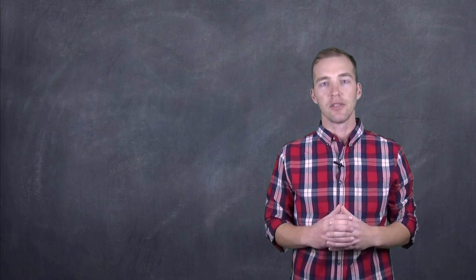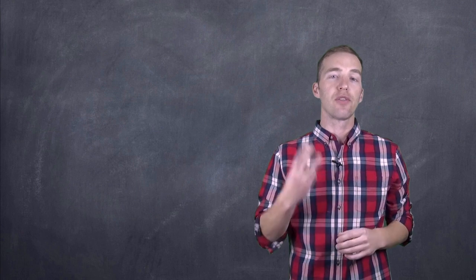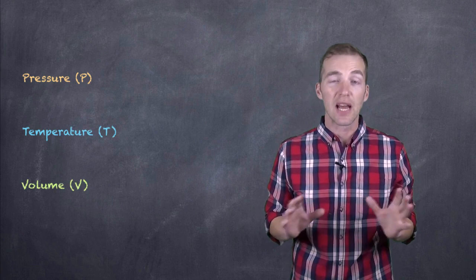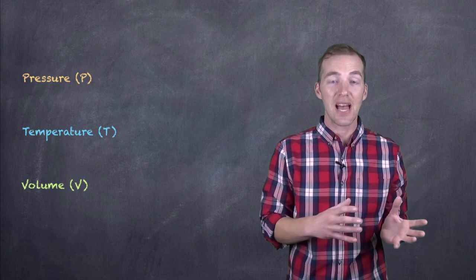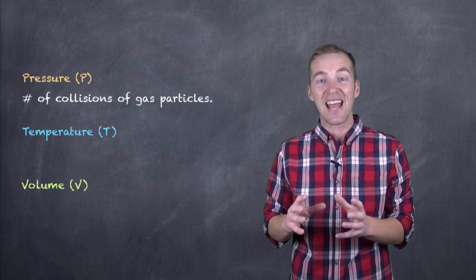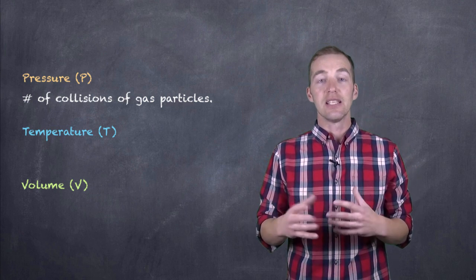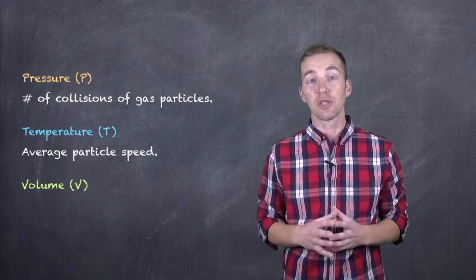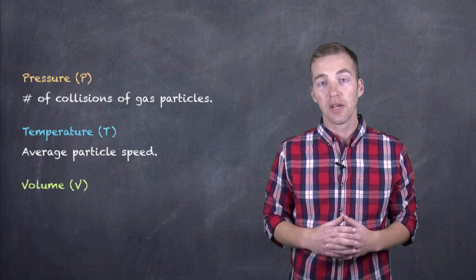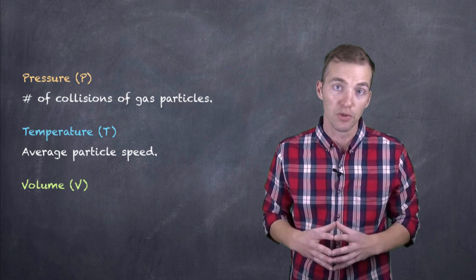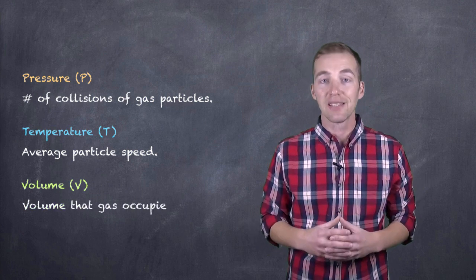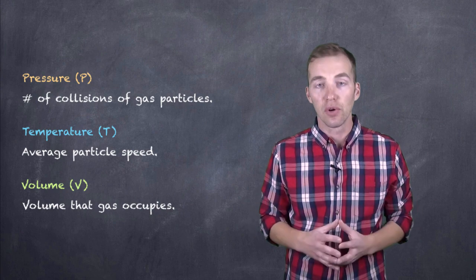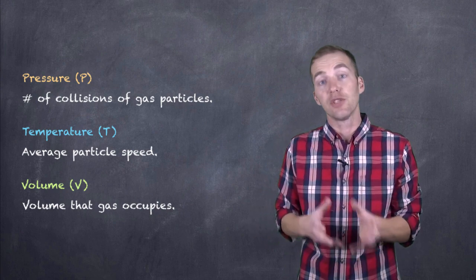As we come to explain gases and the behavior of those gases, we have to understand three properties of gases, and those three properties are pressure, temperature, and volume. Pressure, as it relates to gases, is just the number of collisions that the gas exerts against its container or other gases. The temperature of a system is really just the average kinetic energy or the speed of those particles — the higher the temperature, the faster those particles move; the lower the temperature, the slower they move. Volume is the amount of space a gas occupies, and gases will occupy the entire volume of their container.